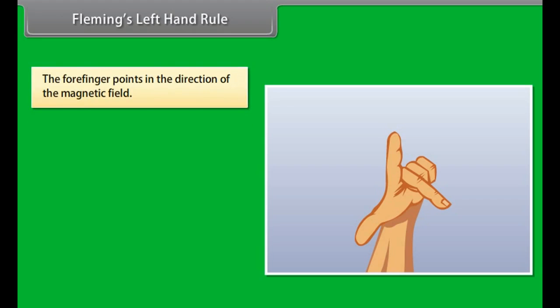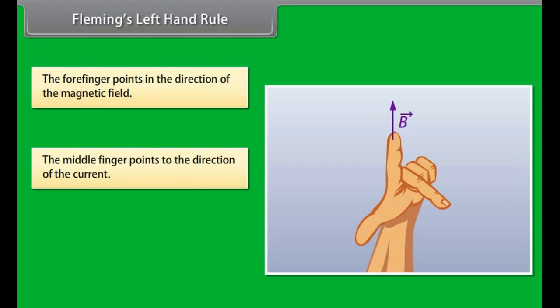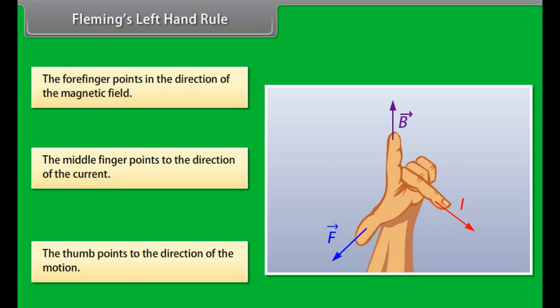Fleming's Left Hand Rule. Fleming's Left Hand Rule is a mnemonic to represent three directions. You need to stretch your thumb, forefinger and middle finger of your left hand. Each finger points to a specific direction. The forefinger points in the direction of the magnetic field. The middle finger points to the direction of the current. The thumb points to the direction of the motion. This is Fleming's Left Hand Rule.